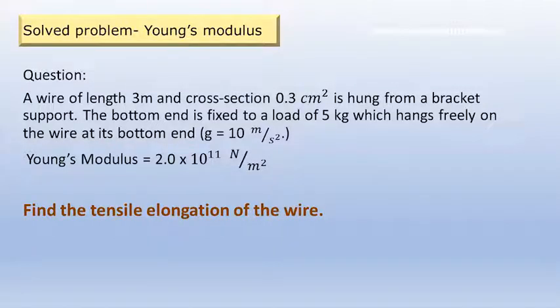Hi, this is a level 1 problem in Young's modulus and we will go through it smoothly. There's a wire whose length is given, its area of cross-section is given, it's hung from the roof. At the bottom end, a mass is hanging. The mass is 5 kg and it elongates the wire by pulling on it. The g value is given, Young's modulus is given. We have to find the tensile elongation of the wire.